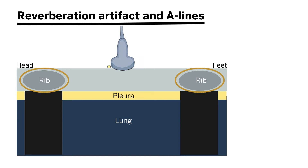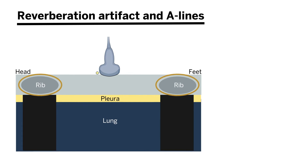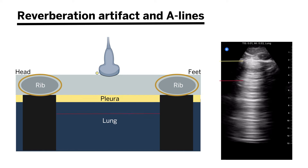Next we're going to cover reverberation artifact and A-lines. Returning to our cross-section of the chest with the probe on the chest and indicator to the head, we'll get the expected rib shadows. Recall that air is the enemy of ultrasound — it's an incredibly strong reflector. Since the chest wall is usually not that thick, there's going to be a lot of bouncing back and forth of sound between the probe and the pleura, and the same beam of sound is going to reverberate over and over again. The machine will incorrectly interpret that as structures that are deeper and deeper within the lung.